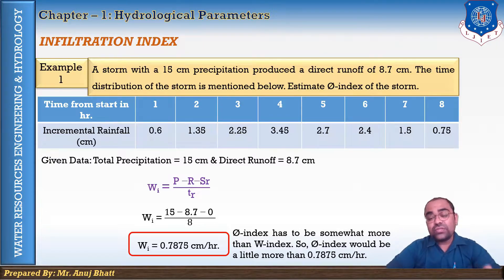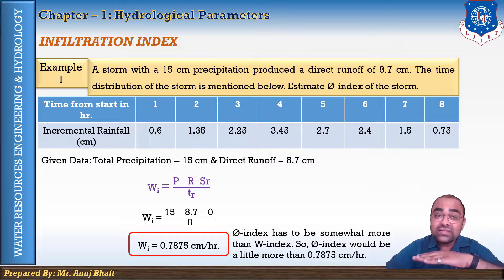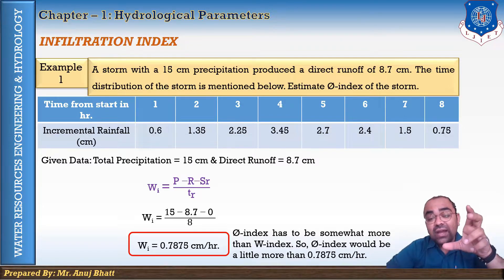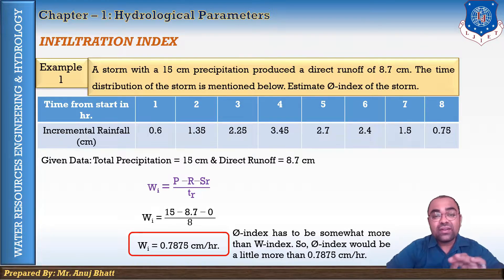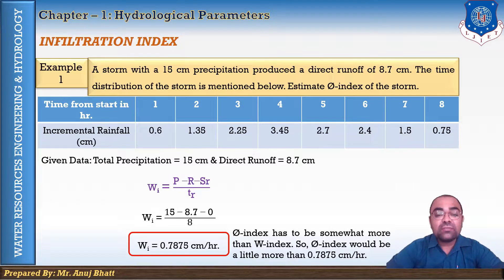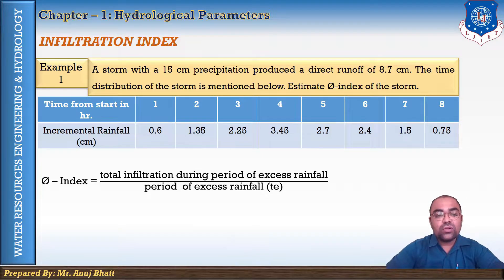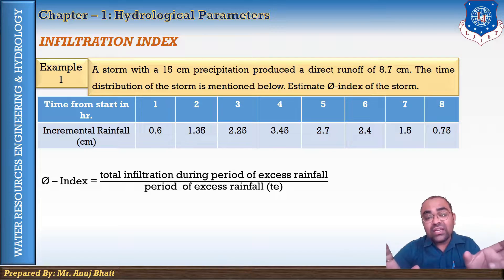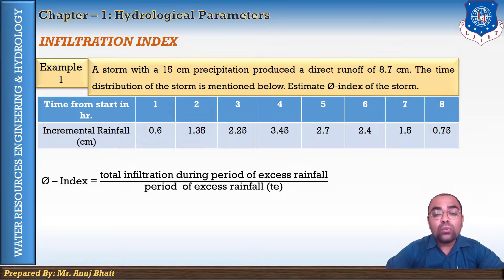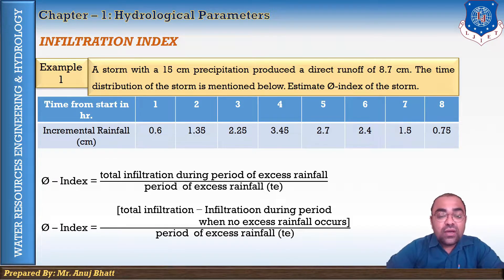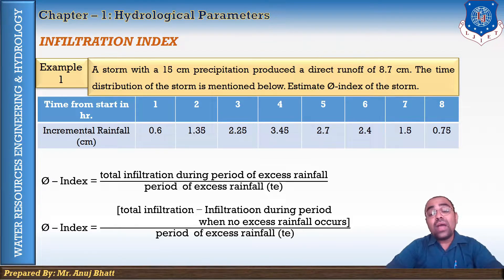We have discussed that the phi index has to be somewhat more than the w index. So now we have one base to find the phi index — it would be a little more than 0.7875 cm/hr. The phi index equals total infiltration during the period of excess rainfall. This term is most important: total infiltration but only during the period of excess rainfall.